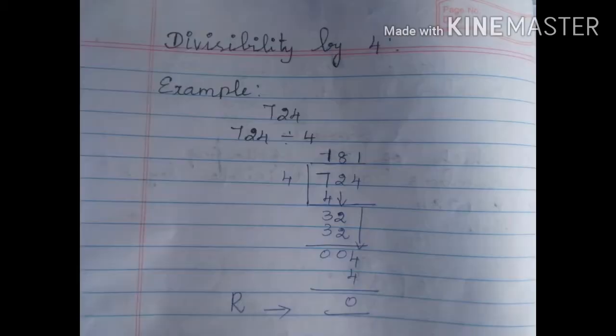Our example sum: our three digit number is 724. So 724 divided by 4. 1 four is 4, subtract we get 3.